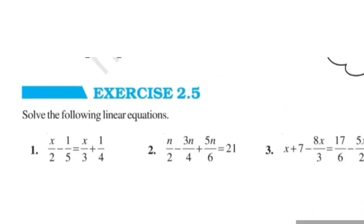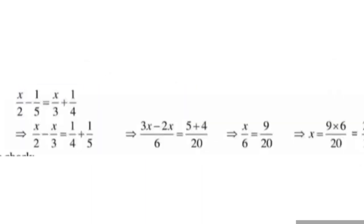Let's see question number 1: solve the linear equation x upon 2 minus 1 upon 5 is equal to x upon 3 plus 1 upon 4. In the solution, first we write variables on one side and constants on the other. So x upon 2 minus x upon 3 on the left, and 1 upon 4 plus 1 upon 5 on the right, with the sign changing on transposition.